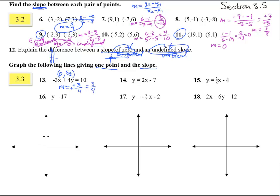So we get 0 comma 5 halves, right up about there, and then up 3, 1, 2, 3, and over 1, 2, 3, 4. There we go.